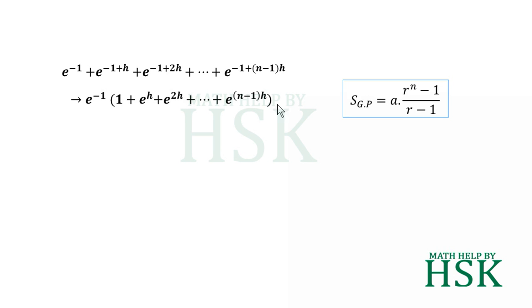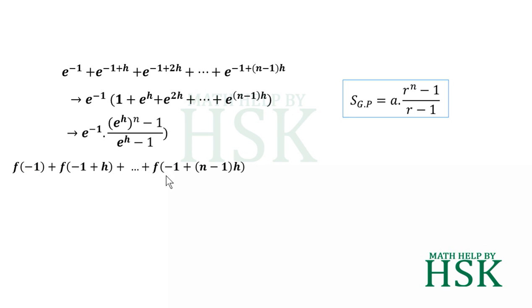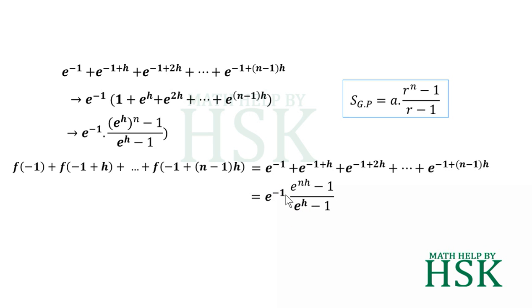The total of the bracket can be written as e to the power of h raised to the power of n, minus 1, upon r minus 1. Since the first term a is equal to 1, I have not written it separately. So the total of the complete expression is e to the power of minus 1 into e to the power of h raised to the power of n, minus 1, upon e to the power of h minus 1. This term e to the power of h all to the power of n can be written as e to the power of n h.